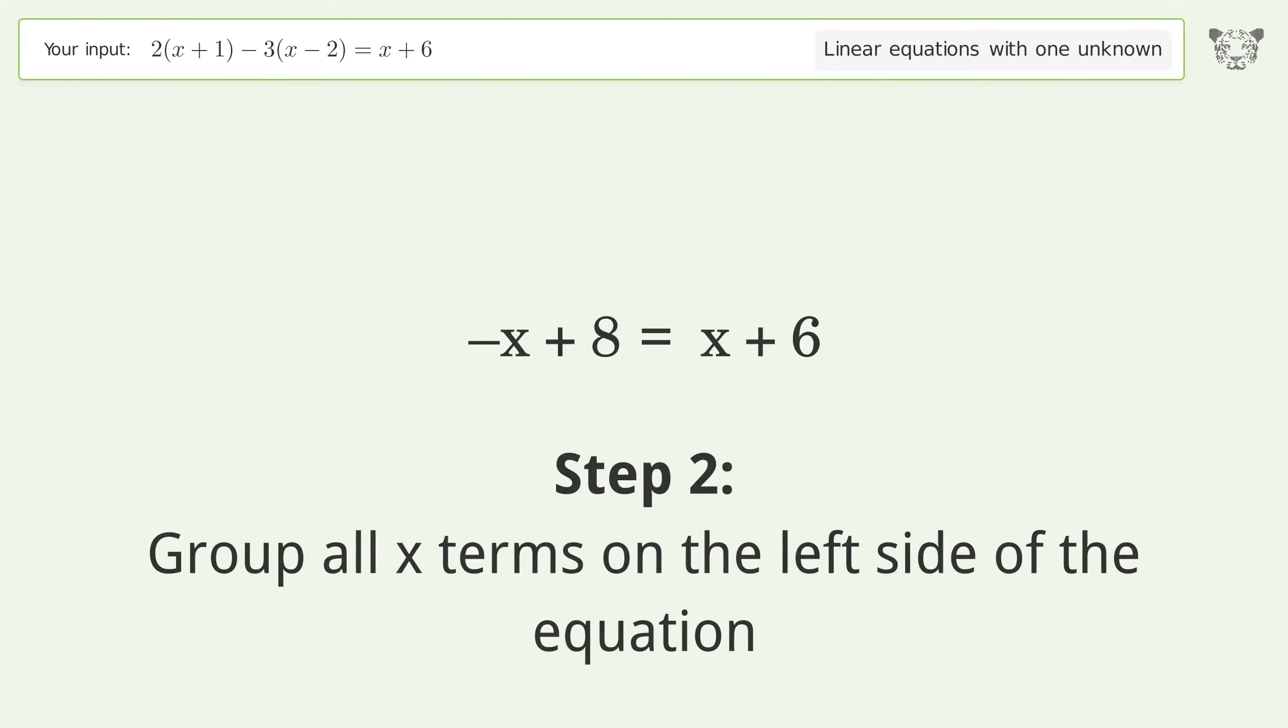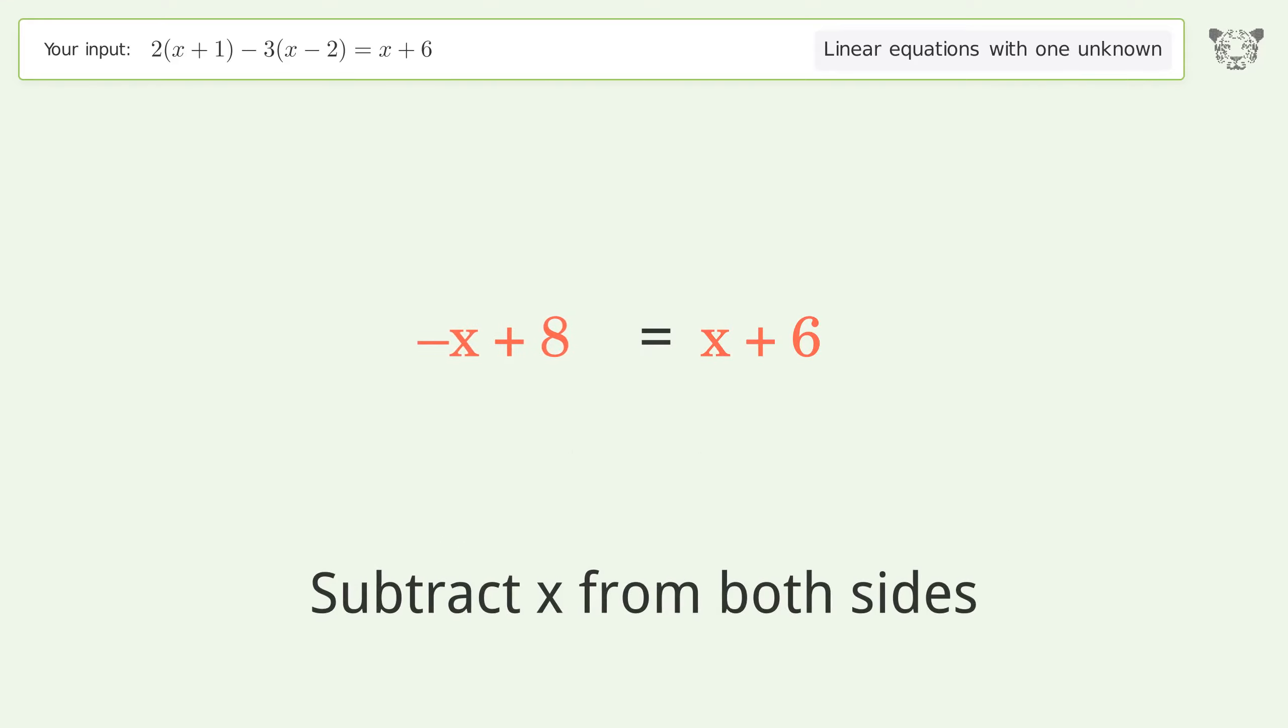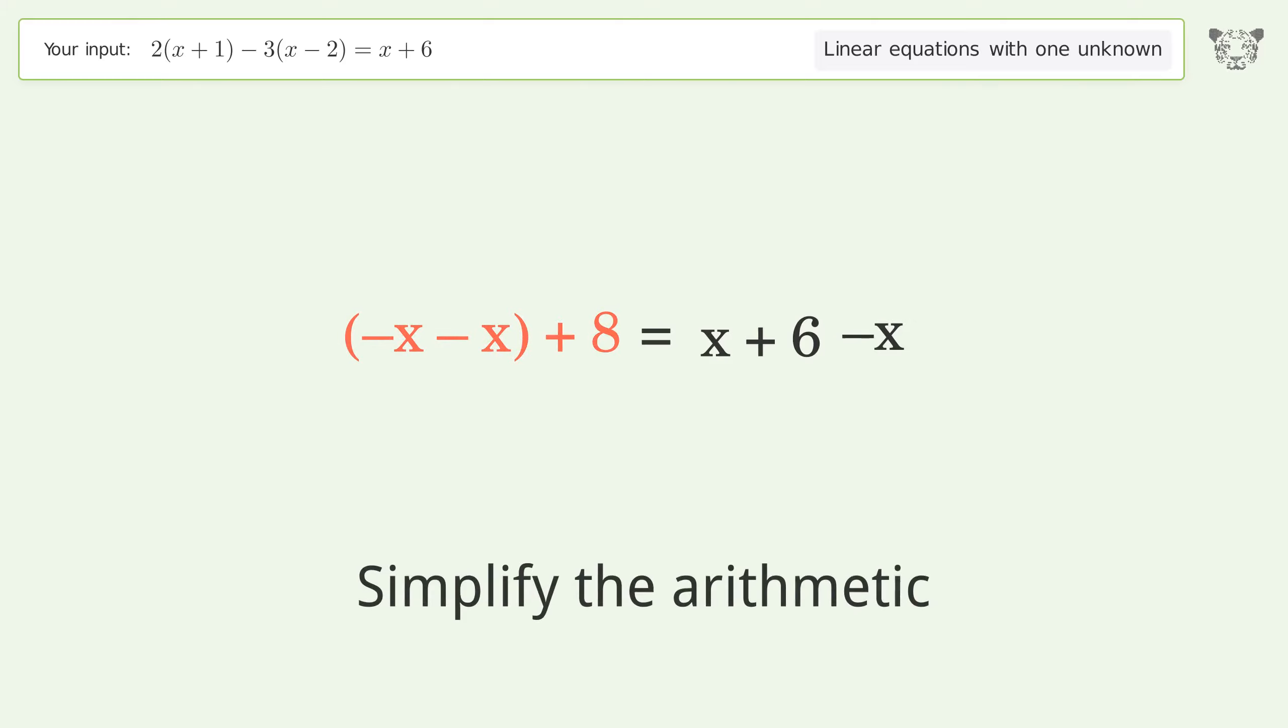Group all x terms on the left side of the equation. Subtract x from both sides. Group like terms. Simplify the arithmetic.